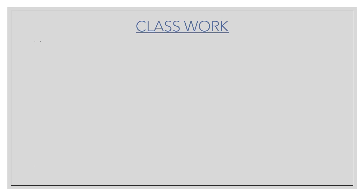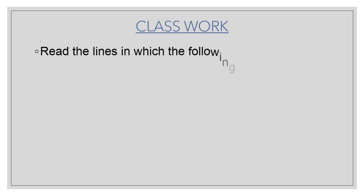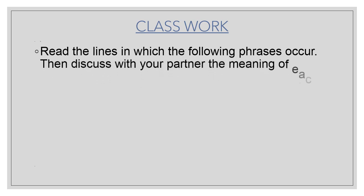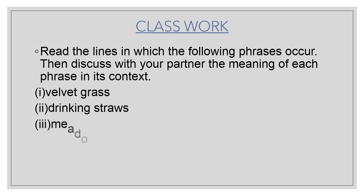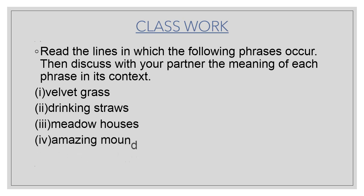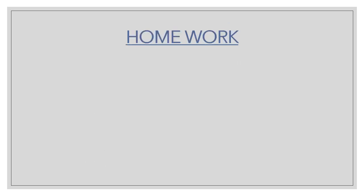Classwork: Read the lines in which the following phrases occur, then discuss with your partner the meaning of each phrase in its context. We will do this together in the online class. The phrases are: (1) velvet grass, (2) drinking straws, (3) meadow houses, (4) amazing mound, (5) fuzzy head. You have to find the meaning of each phrase.